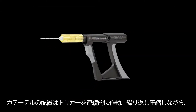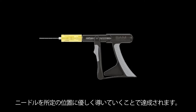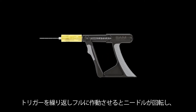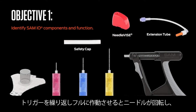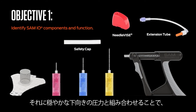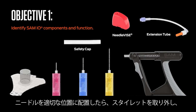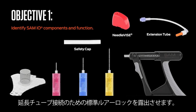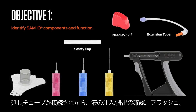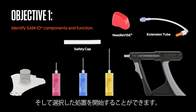The SAM-IO is a manually operated interosseous access system. Catheter placement is achieved by continuously actuating — repeatedly compressing — the driver's trigger assembly while gently guiding the needle assembly into position. Repeated full trigger actuation completes a rotational spin of the needle assembly which, when combined with gentle downward pressure, results in a controlled IO placement. Once the needle assembly is properly positioned, the stylet is removed to expose a standard luer lock for extension set connection. With the extension set connected, aspiration verification, flushing, and selected treatments may commence.